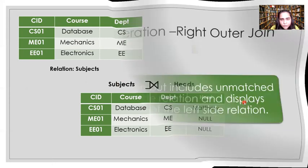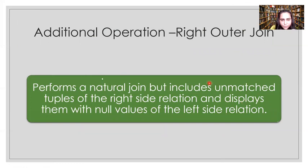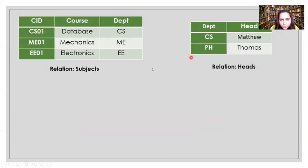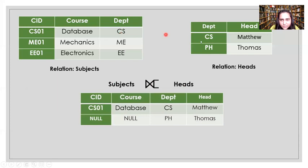Right outer join also performs a natural join, but preserves the values of the right-side relation, displaying them with null values of the left-side relation. The symbol extends to the right side. CS matches and is shown as-is, but PH (with Thomas) does not match in subjects, so CID and course are marked null. ME and EE are not included because it is a right outer join.